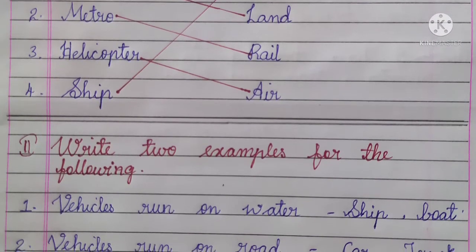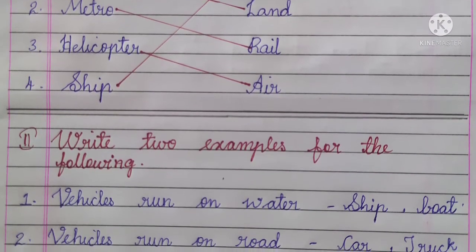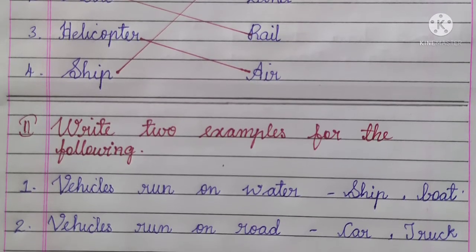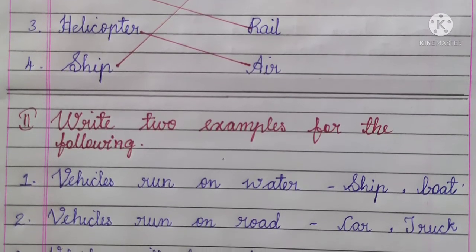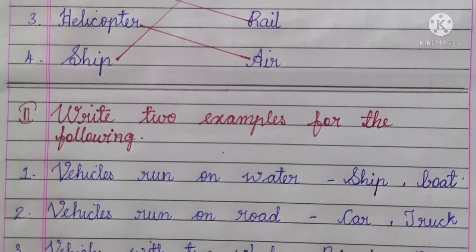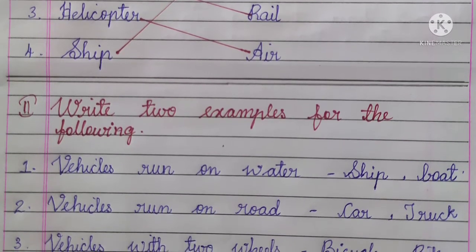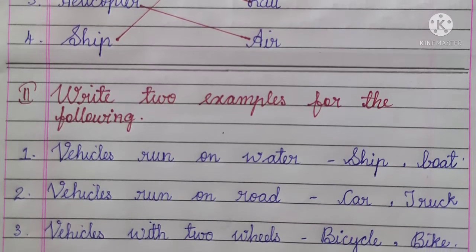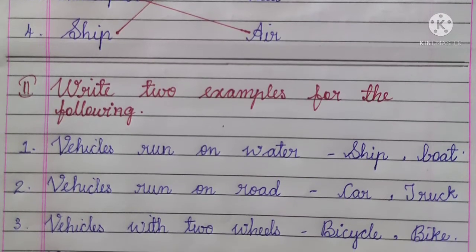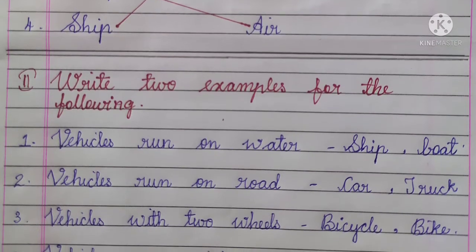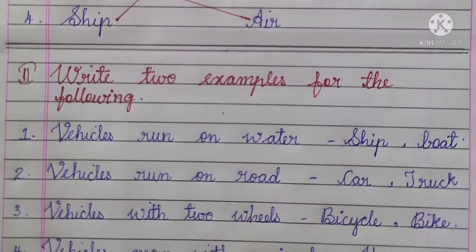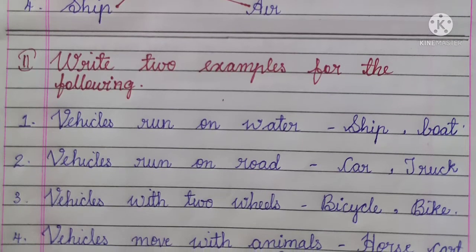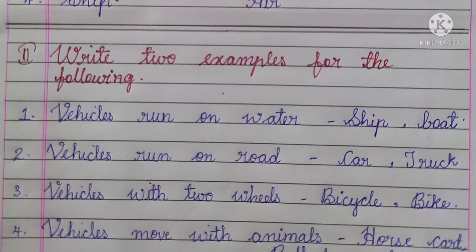Second main: write two examples for the following. Number 1, vehicles run on water — ship, boat. Number 2, vehicles run on road — car, truck.